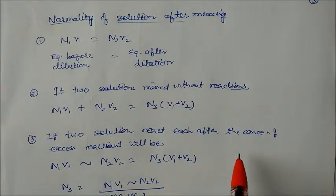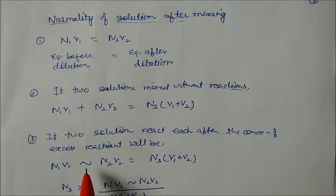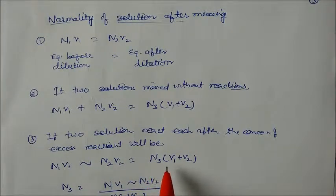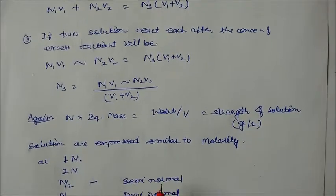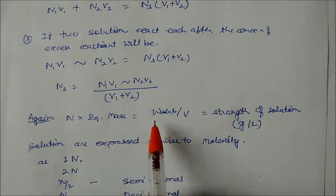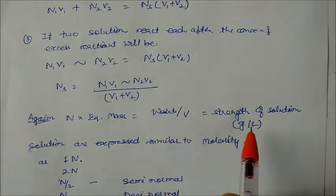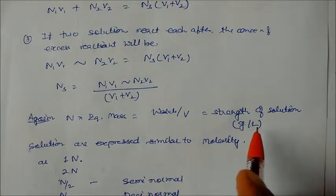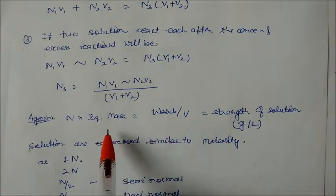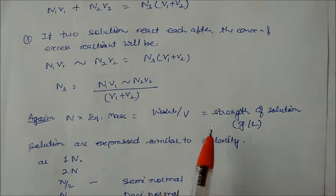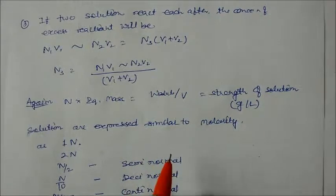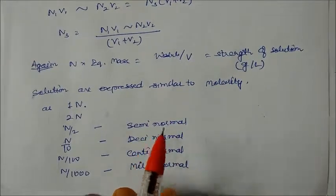If two solutions react with each other, the concentration of the excess reactant is: N3 = |N1V1 − N2V2| / (V1 + V2). Also, normality multiplied by equivalent mass gives the strength of the solution in grams per liter. You can be asked to find the strength of the solution after a reaction, so multiply normality by equivalent mass to get strength.